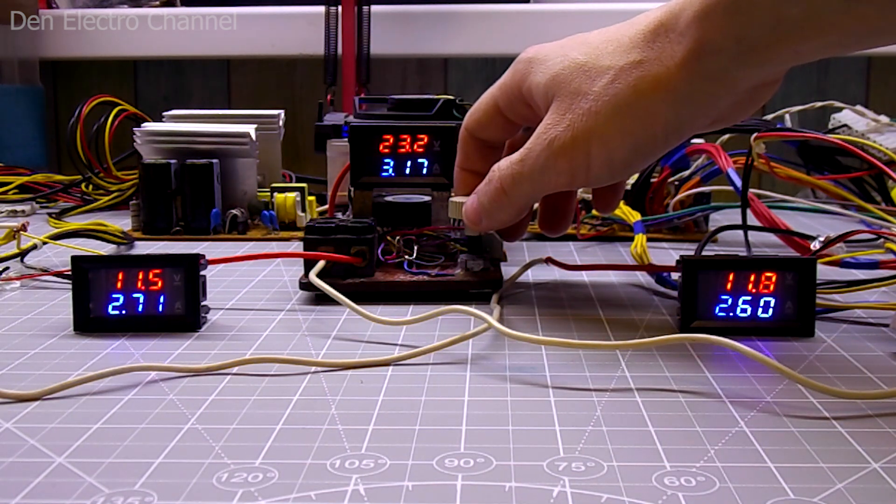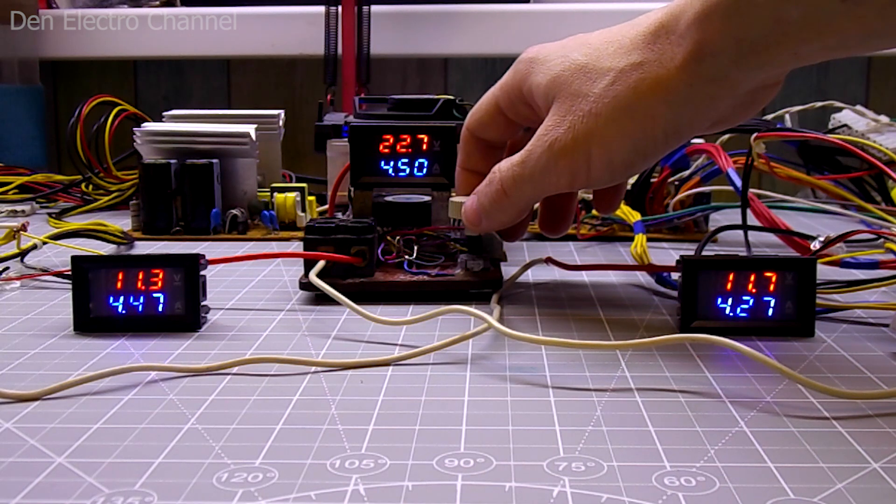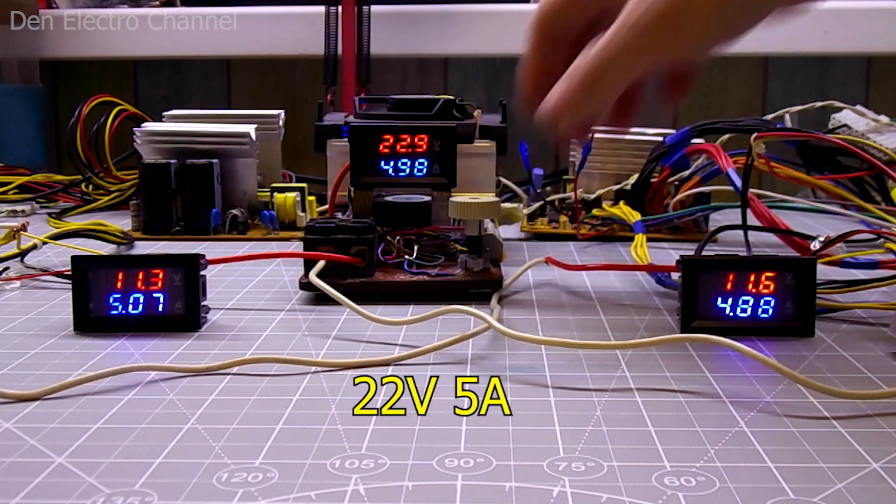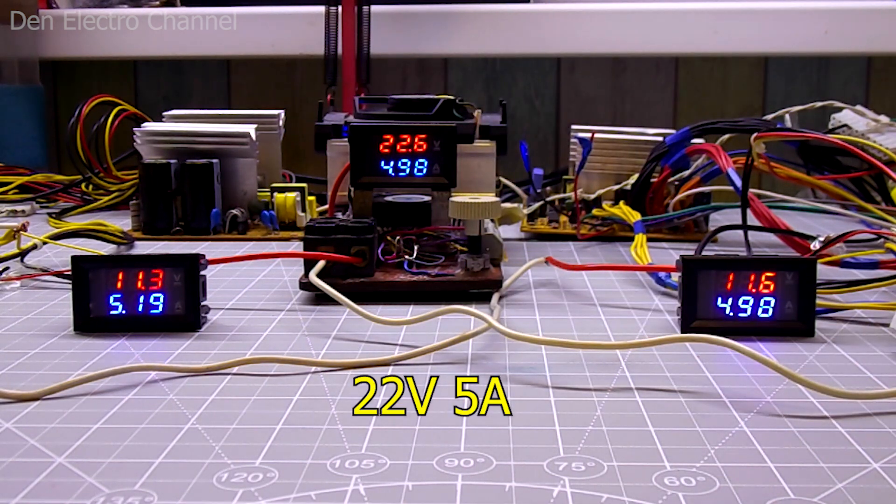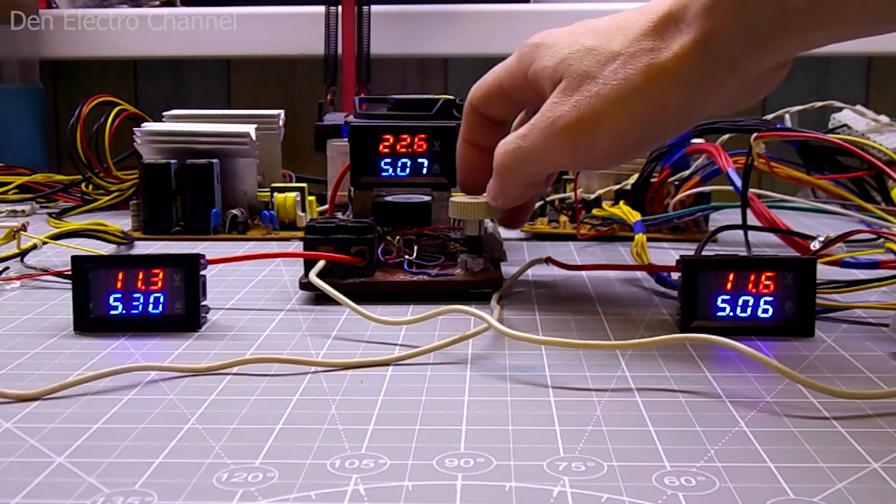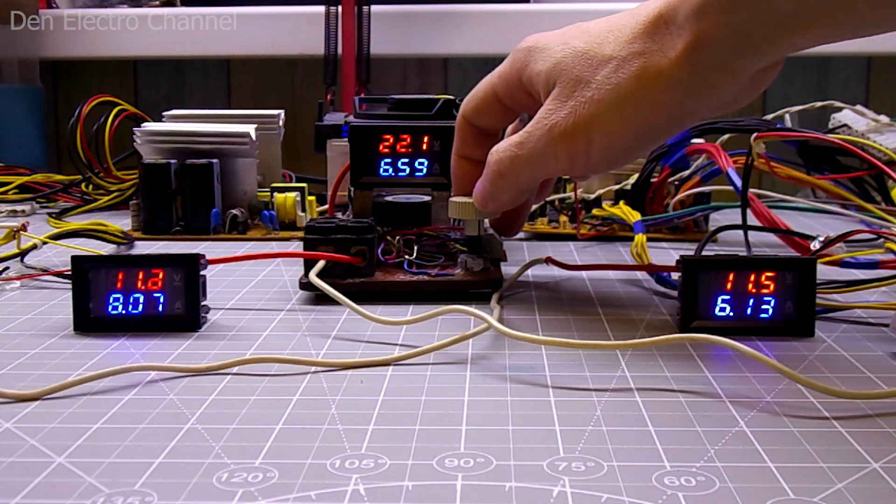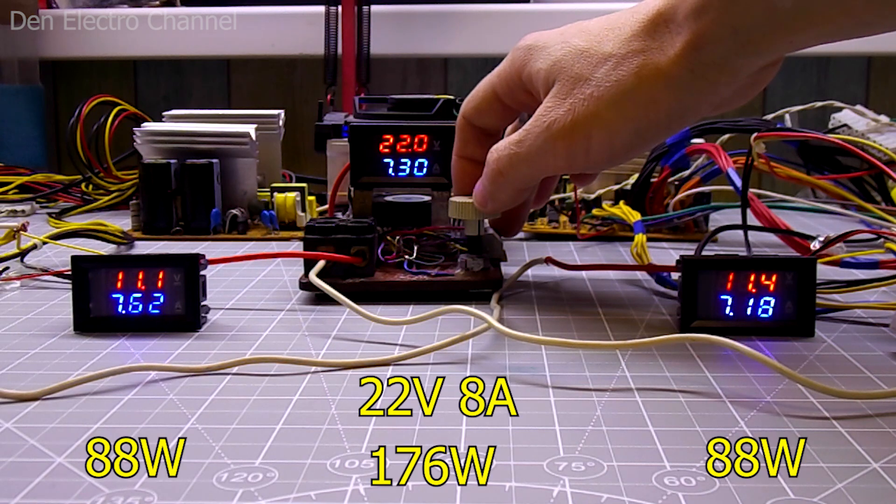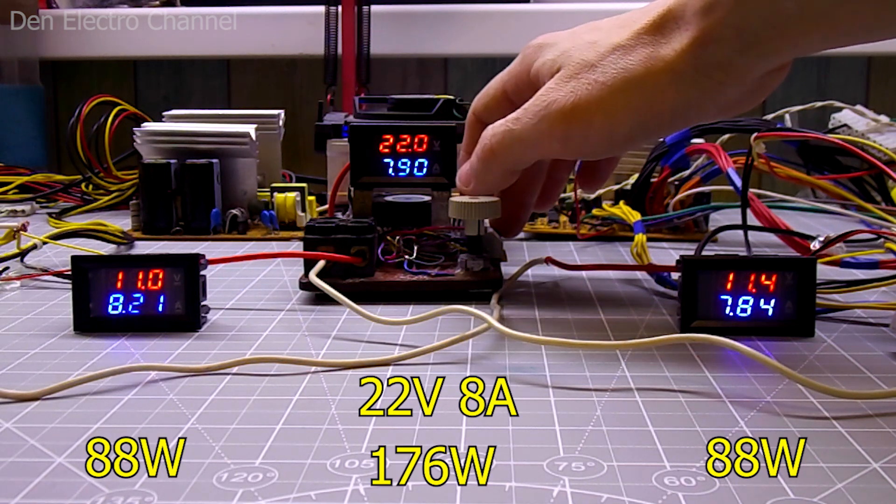I increase the load further. The voltage drops to about 22.5 volts, the current is 5 amperes. The power is quite decent, more than 100 watts. But each of the units is loaded with only 55 watts. I increase the load further. With a current of 8 amperes everything also works fine.